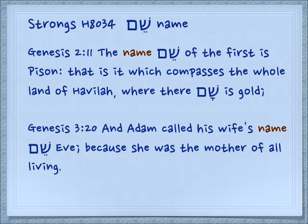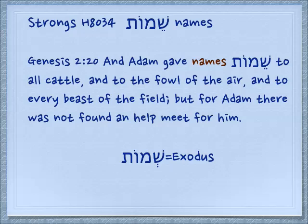You probably already know this word shem. Many people will not say the four-lettered name of God — they just say ha-shem. Hashem means the name. Genesis 3:20: And Adam called his wife's name — shem — Eve, because she was the mother of all living. Now even though shem is a masculine noun, it takes a feminine plural. And there are a lot of these irregular words in Hebrew. Genesis 2:20: And Adam gave names — shemot — to all cattle, and to the fowl of the air, and to every beast of the field. But for Adam there was not found a helpmeet for him.